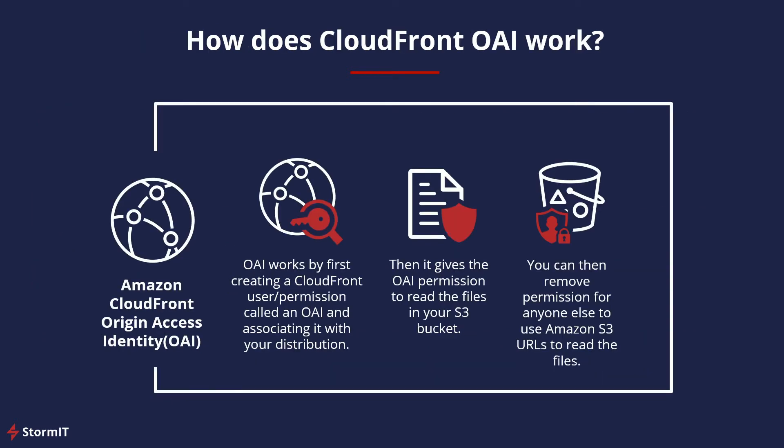So how does CloudFront OAI work? CloudFront OAI works by first creating a CloudFront user permission called an origin access identity and associating it with your distribution. Then it gives the OAI permission to read the files in your S3 bucket, and as the last step, you should remove permission for anyone else to use Amazon S3 URLs to read those files.